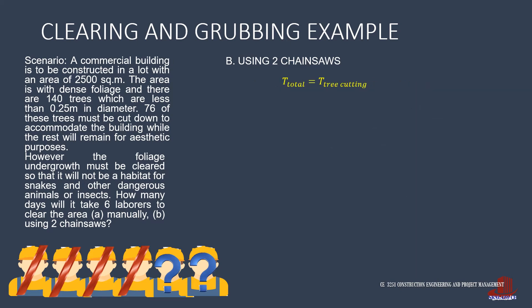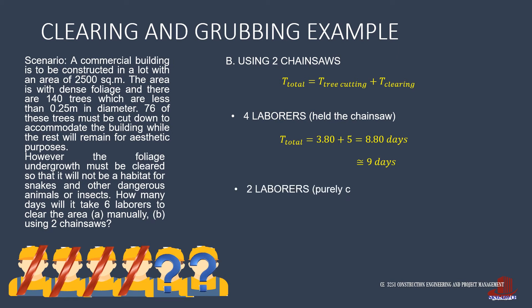The total duration of the job can be classified into two. One for those workers with chainsaws, and two for pure manual labor. The 4 laborers using a chainsaw took 3.8 days to cut the trees and another 5 days to clear the area of 2,000 square meters, for a total of 8.8 — or let's say 9 days. The remaining 2 laborers work purely by hand, starting at 3.8 days and another 6.2 days for clearing the remaining area, giving them 10 days in total.